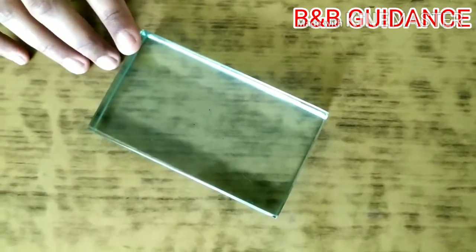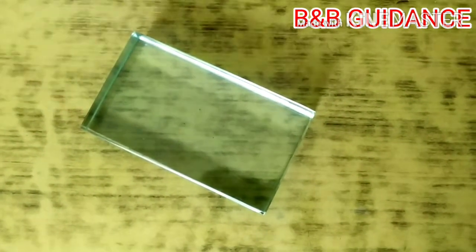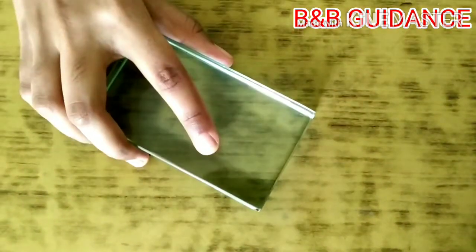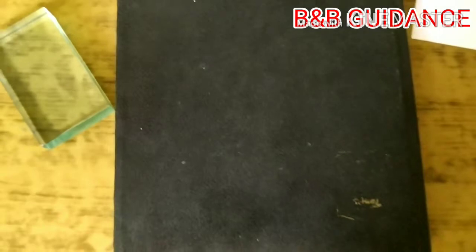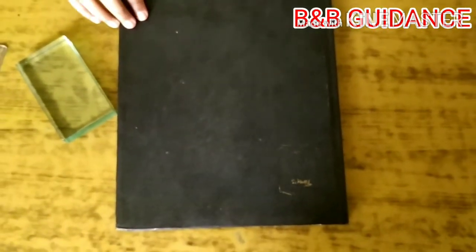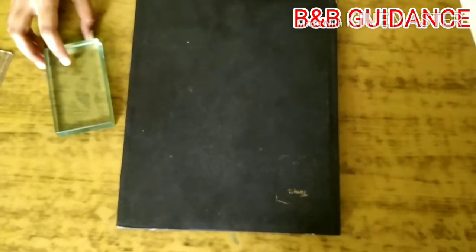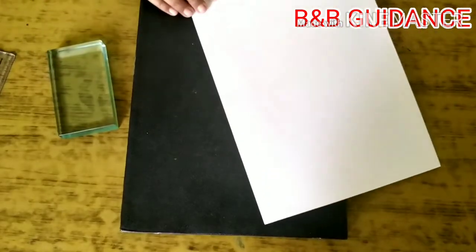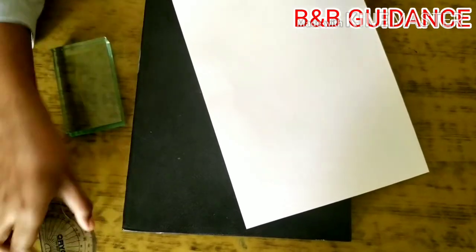To find the refractive index of glass, we need a glass slab, then we need a wooden drawing board which is not available to me right now. So instead of the wooden board, I am using a book, then we need a paper and all other geometrical instruments for the experiment.